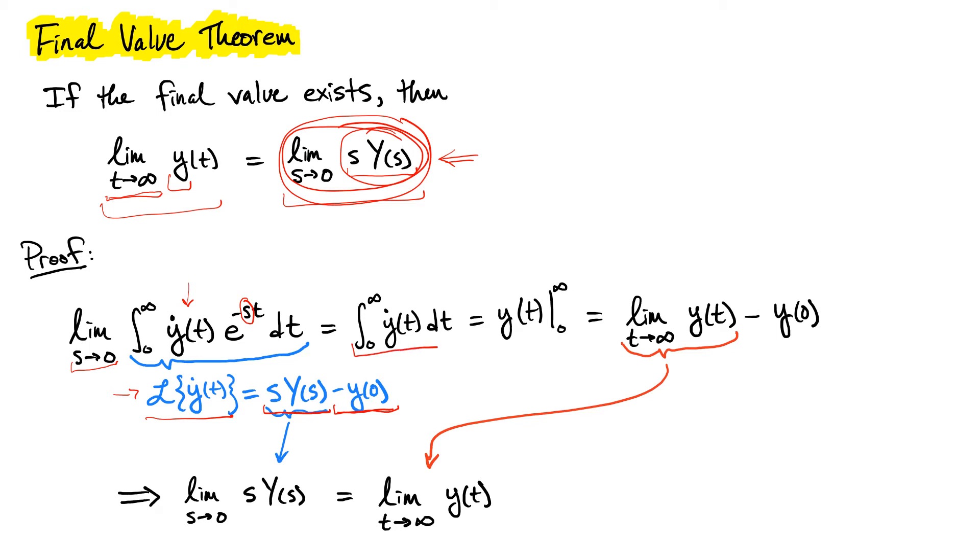Now we're left with just this integral, which is a function of time. It should be noted that you can exchange the order of taking a limit and integration when the integrand behaves well and is continuous at that point as s goes to zero. That's an important piece—we're making an assumption there—but this holds for most of our physical systems that we're going to study.